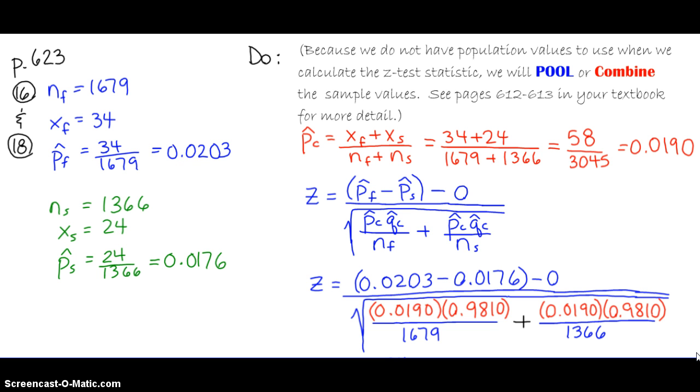However, in this problem, because we don't have population values to use when we're calculating the z-test statistic, we're going to pool, otherwise known as combine, the sample values. And if you need some more information, you can take a look at page 612 and 613 in your textbook.